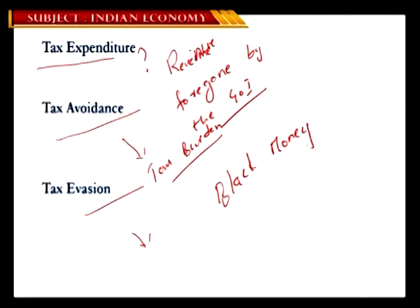All money that is made but not reported to the government is generally what we refer to as black money. People avoid reporting income for various reasons — very high tax rates, feeling that the government is not doing enough, or because the income was earned through illegal means. Whatever income is made and not reported ends up becoming black money.